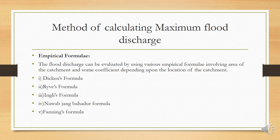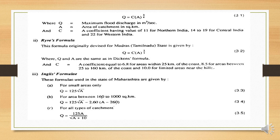The first one is Dickens formula: Q = C × A^(3/4). Here Q is maximum flood discharge, A is area of catchment in square kilometers, and C is a coefficient. The value of C depends on the location: for North India, C = 11; for Central India, C = 14 to 19; and for Western India, C = 22.